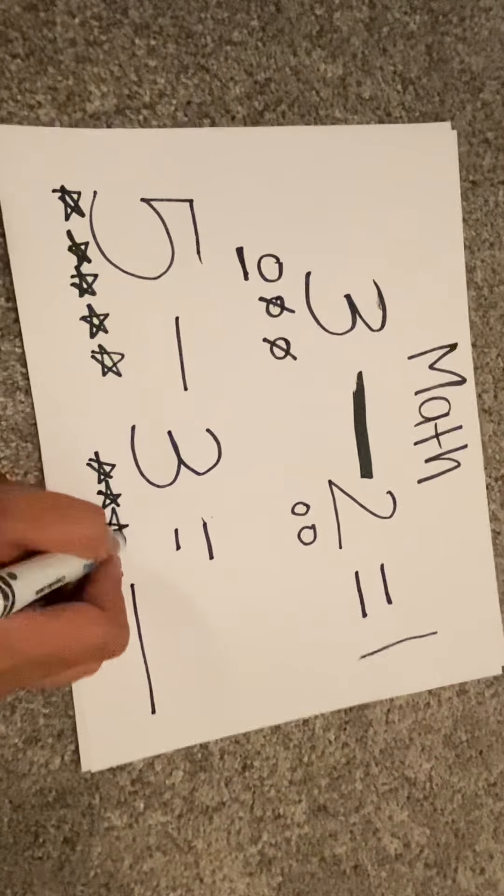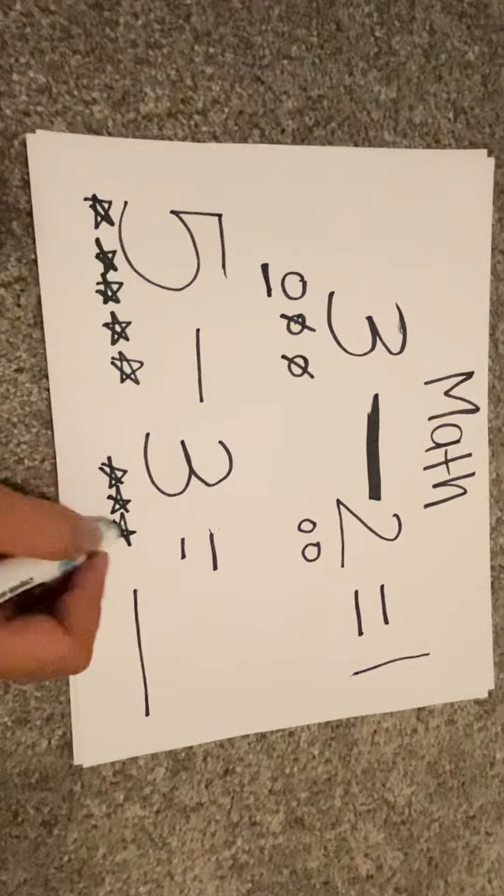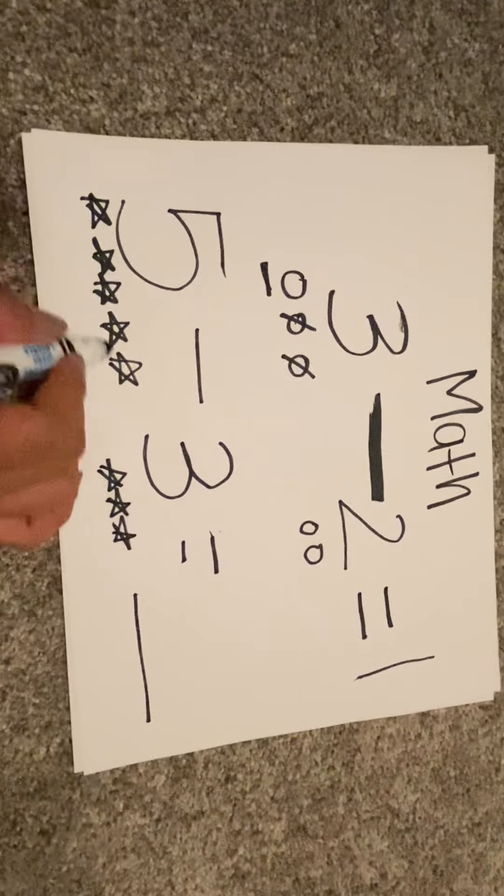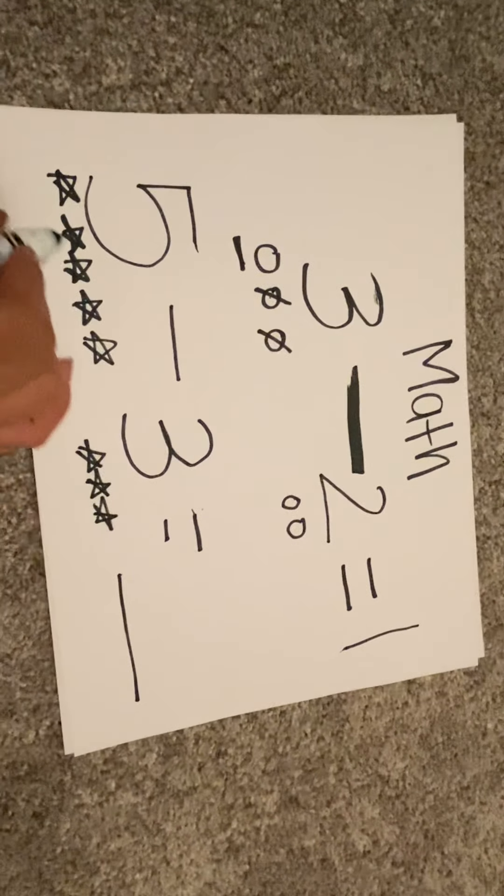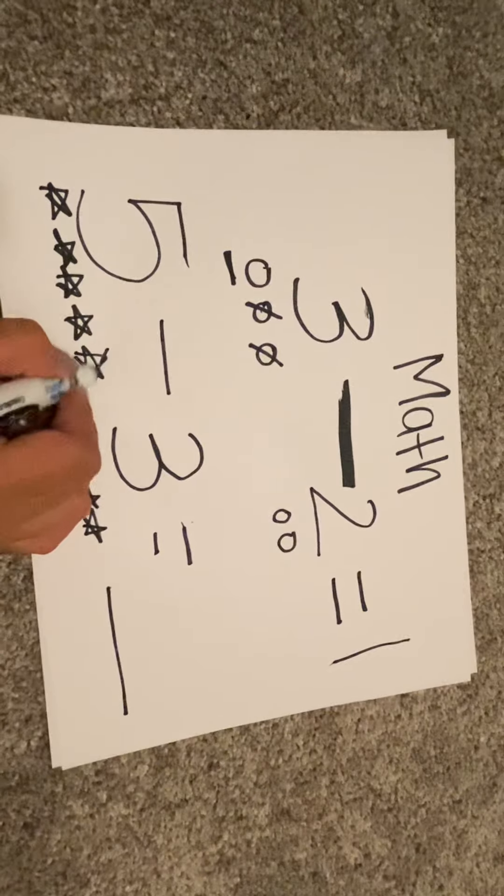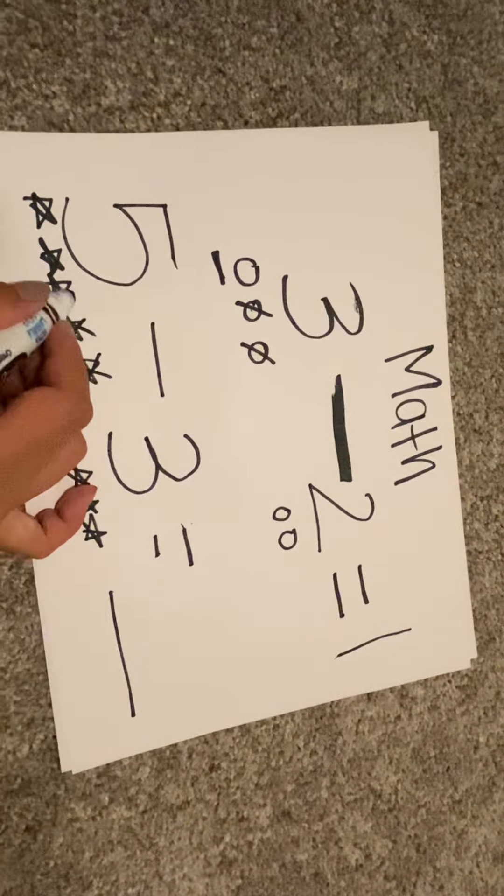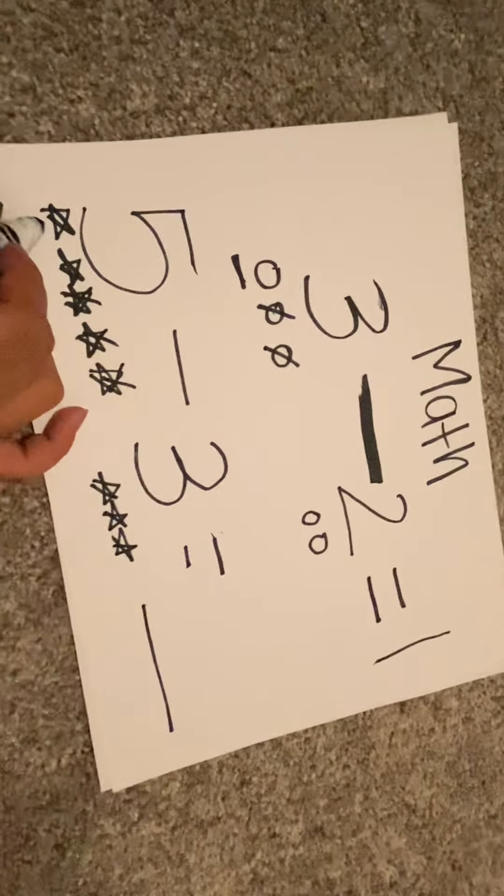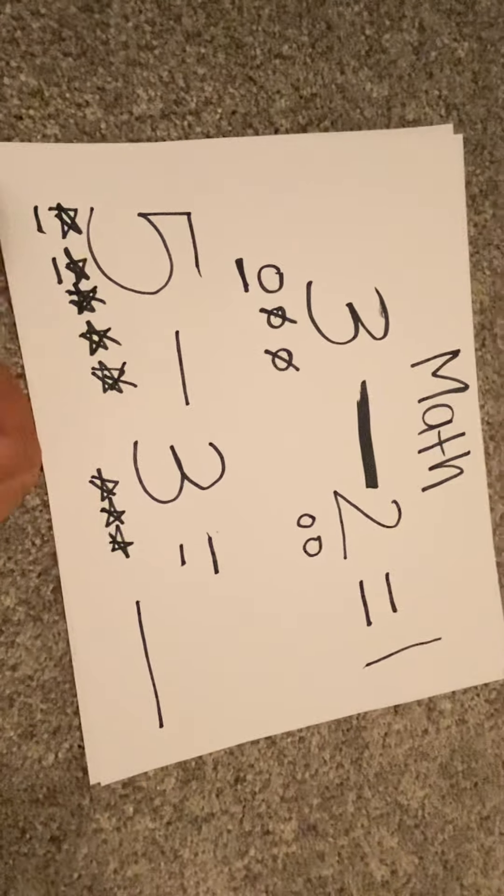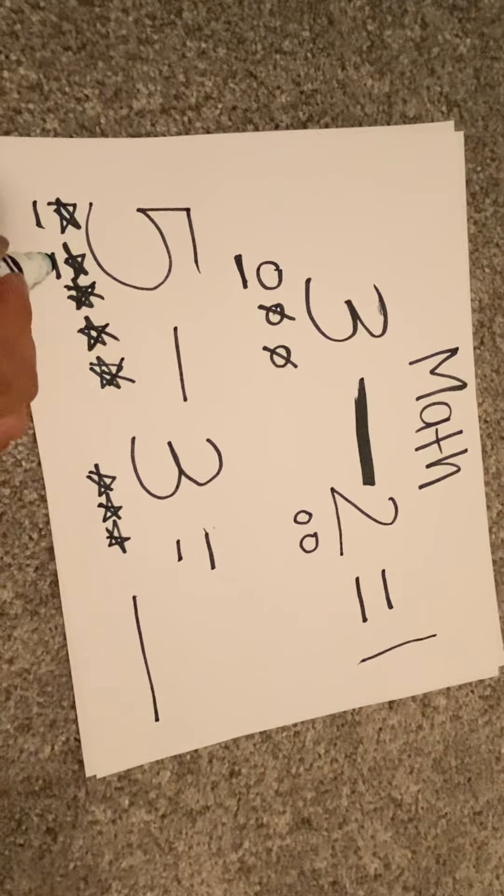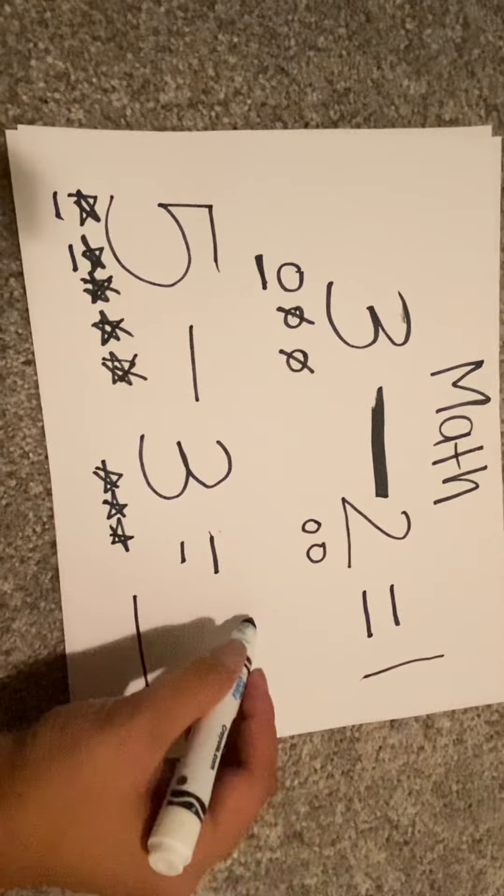Now this number says you are taking away three stars: one, two, three. Three stars you take away from this set of numbers. So you go one, two, three. Now how many stars do you have left over? One and two. So the answer would be two.